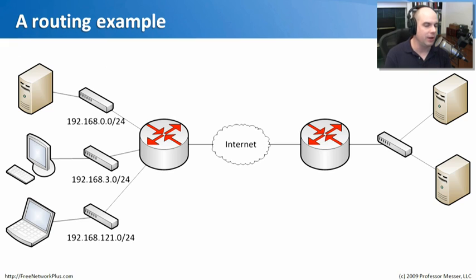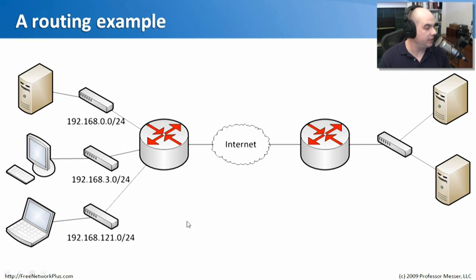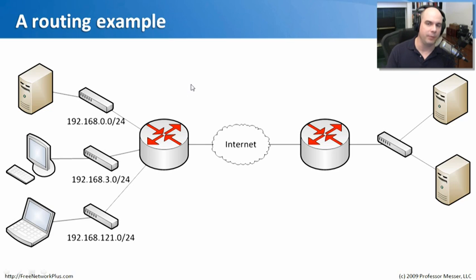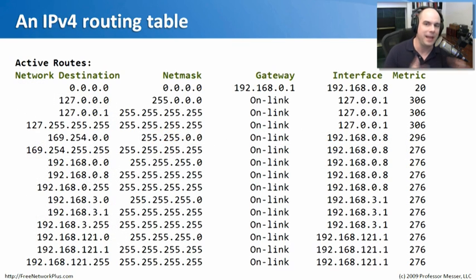Here's an example. Let's say we need to talk across the network. We're on a 192.168 network and we have a router connecting to all of these networks. How does that router know where to send information? Fortunately, inside the router is a big table — just a big list of networks — and that list helps the router know where it should send traffic.